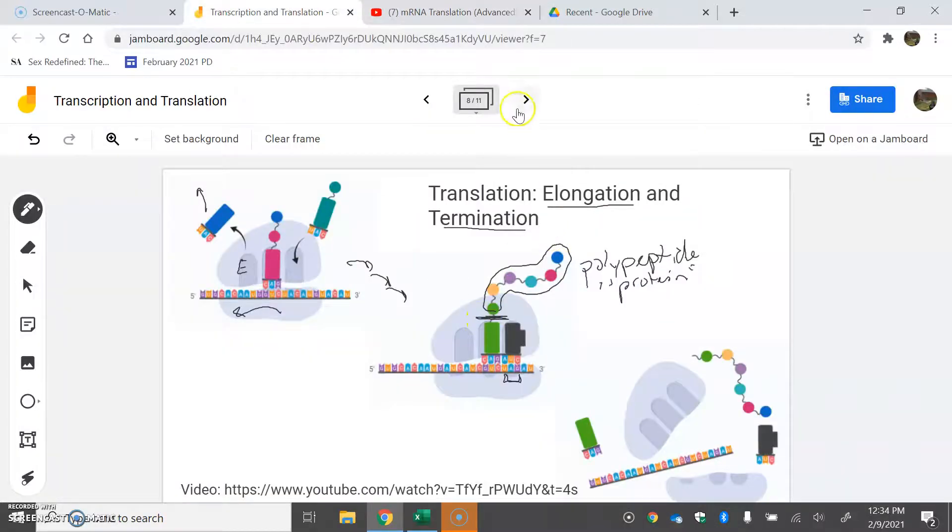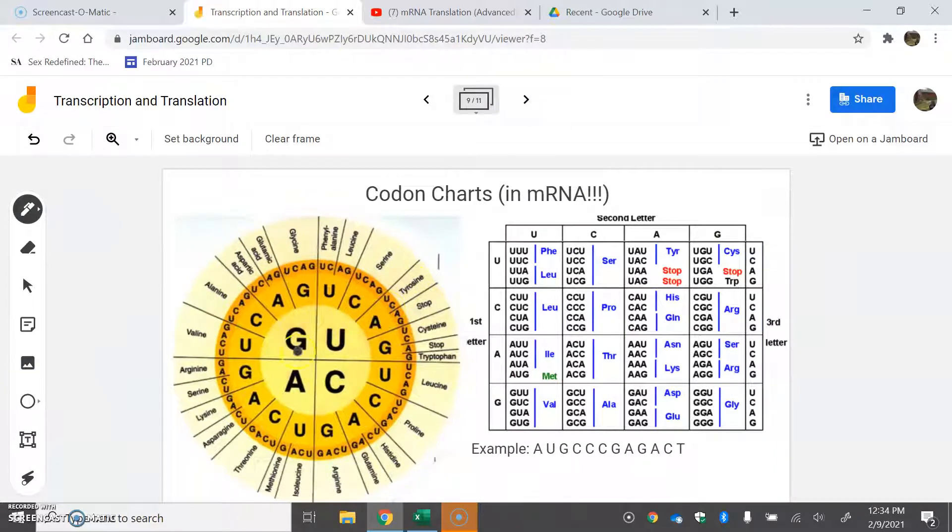Moving back to here - codon charts are typically in mRNA, so we have to be aware of that. If you're given an mRNA sequence like this, you break it into codons and use your chart. Your chart is either a big circle or a square. They're all the same. You start with the first letter on the inside, then the second letter, then the third. You always use mRNA.